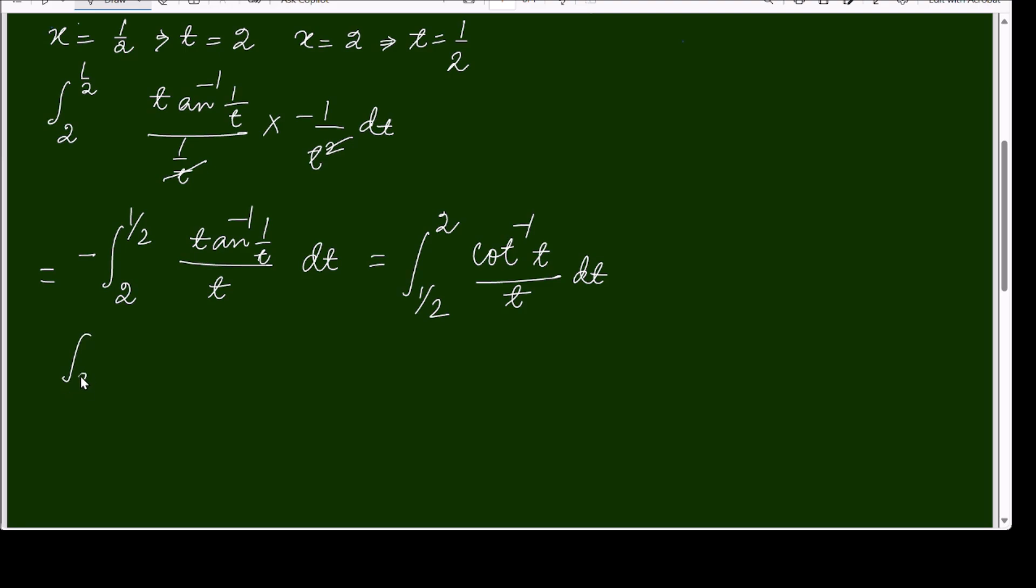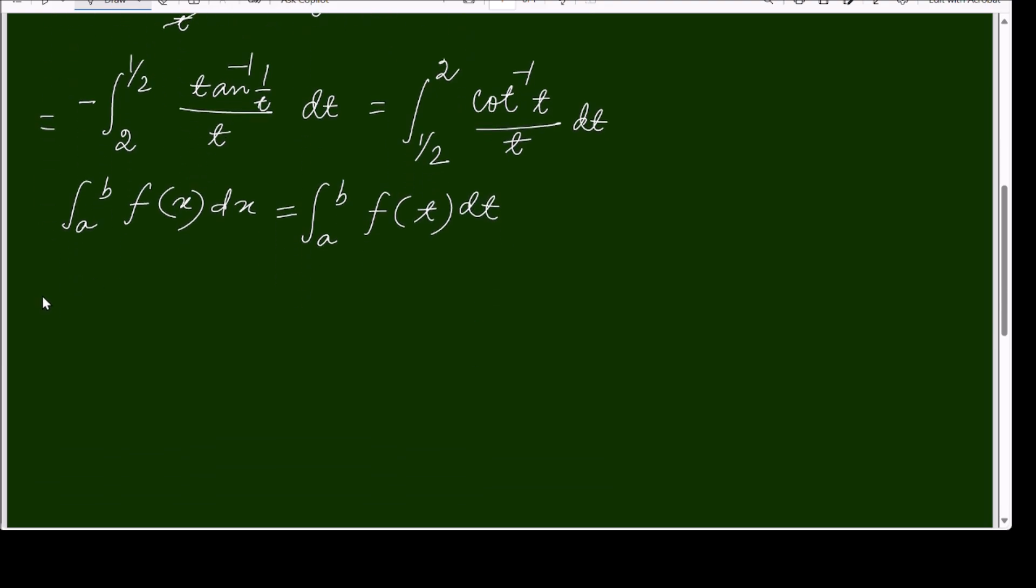Next, using the property a to b f of x dx is same as a to b f of t dt, so replacing t by x, this can be written as half to 2 cot inverse x over x dx.